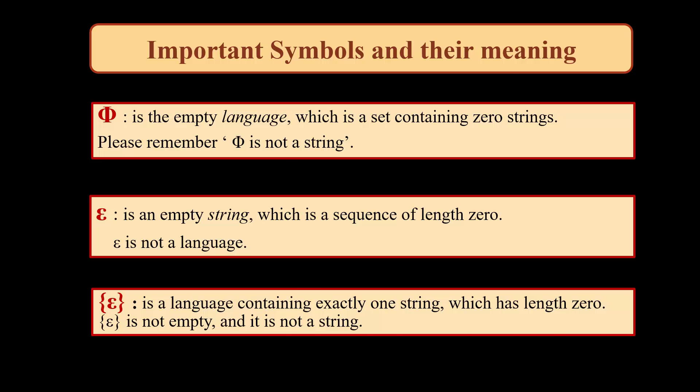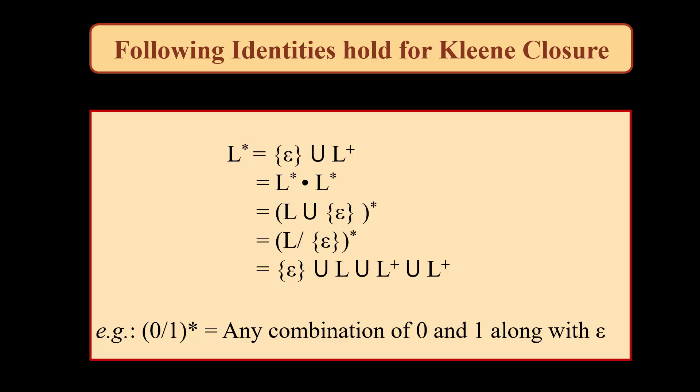Now if we talk about Kleene closure, that means a-star or l-star. For any language, the following identities hold for Kleene closure: l* is equal to epsilon union l+, where l+ is positive closure meaning l ranging from 1 up to infinity. This is also equivalent to l* concatenated with l*, and likewise equivalent to (l union epsilon)* and (l or epsilon)*. Further, it is equivalent to epsilon union l union l^2 union l^3 and so on. All these identities hold for Kleene closure.